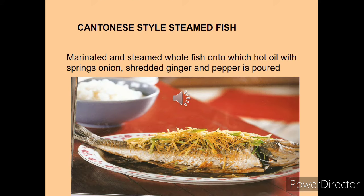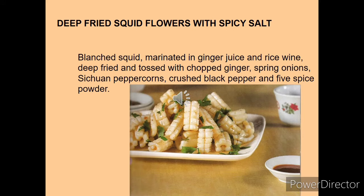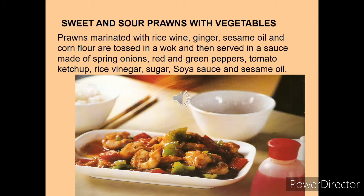Cantonese style steamed fish: marinated fish are steamed and served along with spring onion, ginger and pepper. Deep fried squid flowers with spicy salt: squid is marinated in ginger, wine and different vegetables, and five spice powder is also used. Sweet and sour prawns with vegetables: prawns are marinated with rice wine, ginger, oil and corn flour, tossed in a wok, and served with soy sauce.